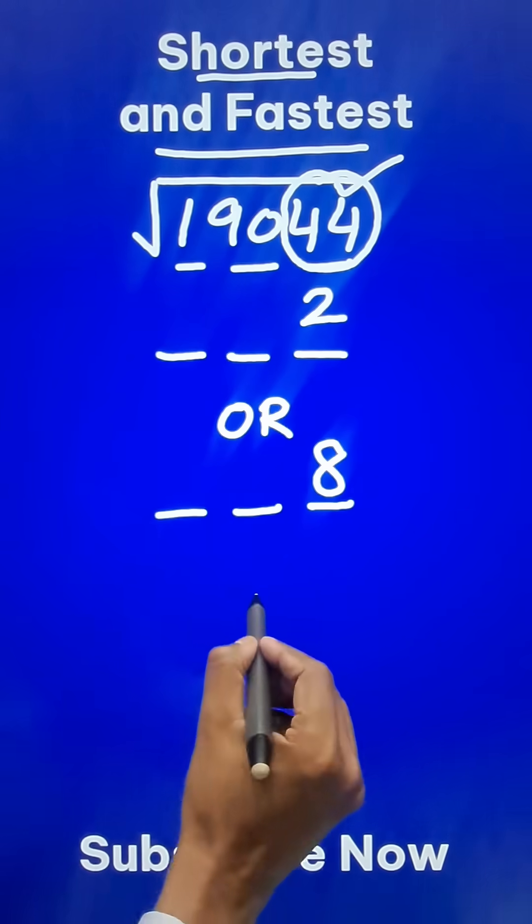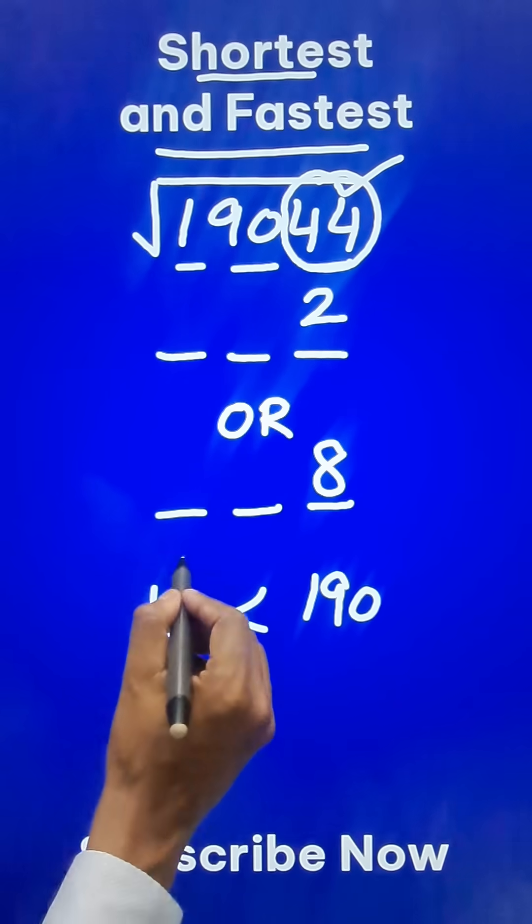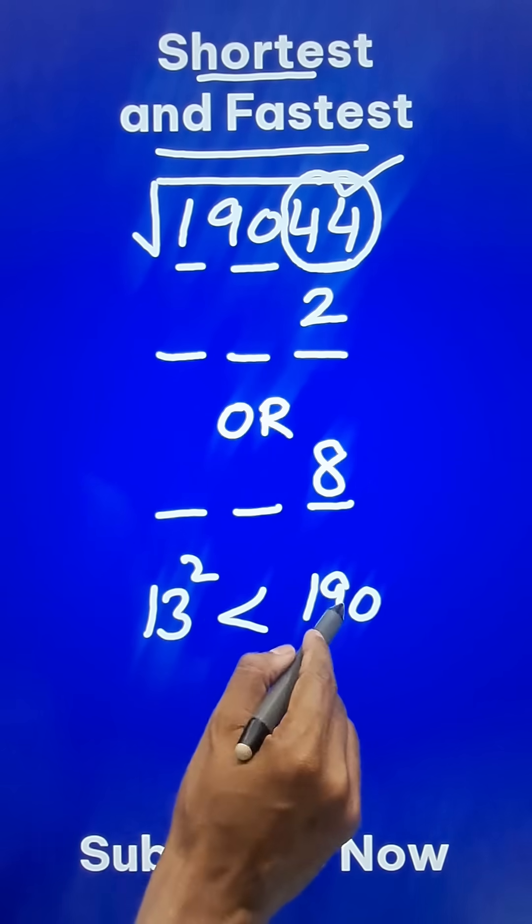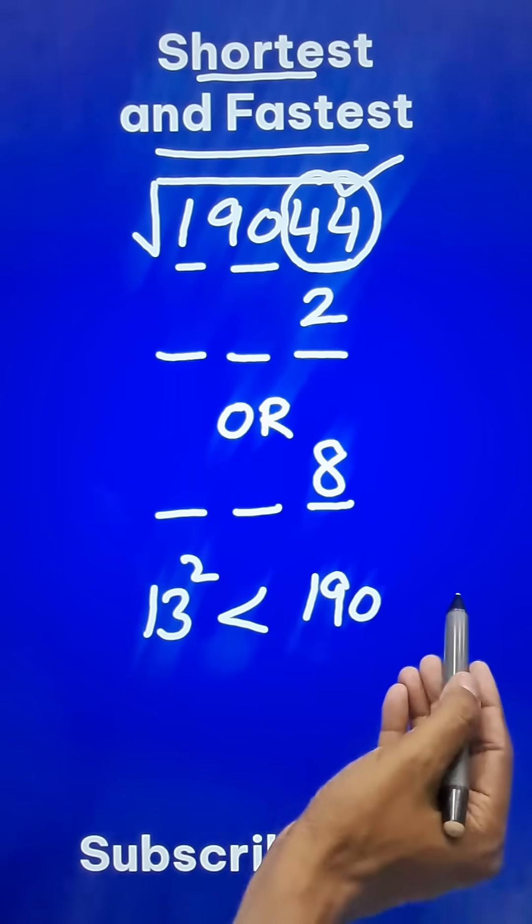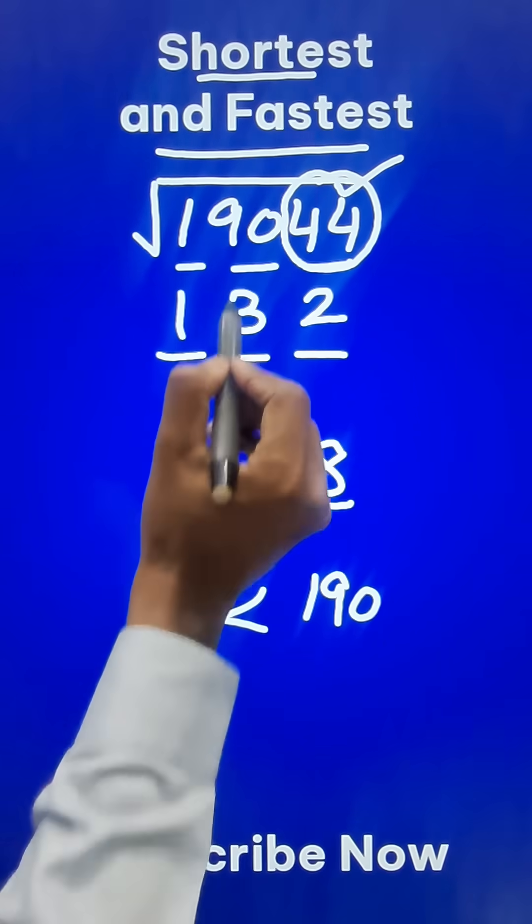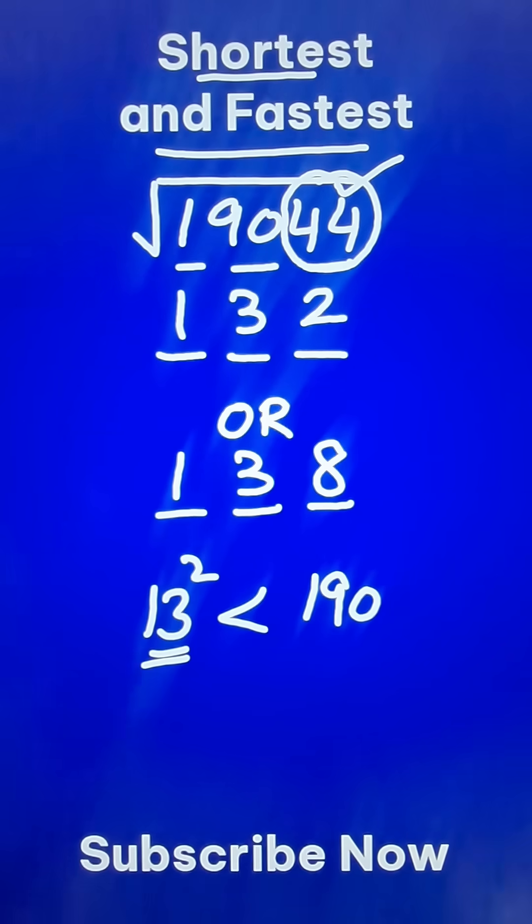Now the remaining number 190 actually is very close to 13 square which is 169. 14 square will be 196 which is above 190. So I don't want to go above 190. Just below that we have 13 square. So the number 13 forms the remaining two digits of this three digit number.